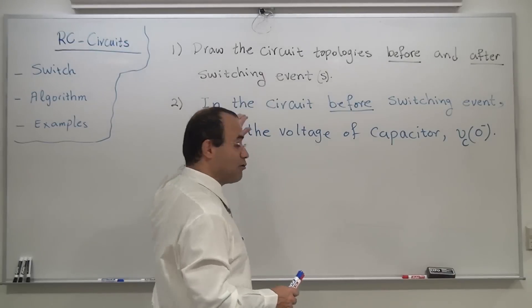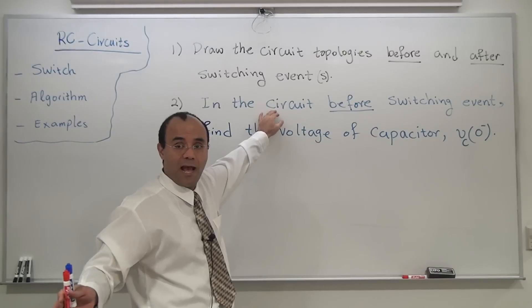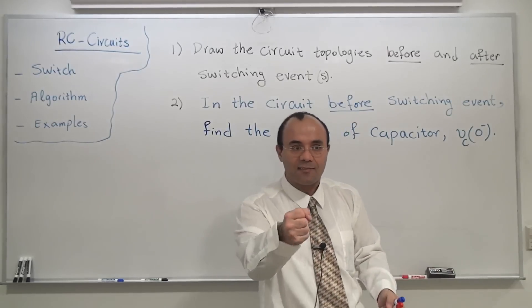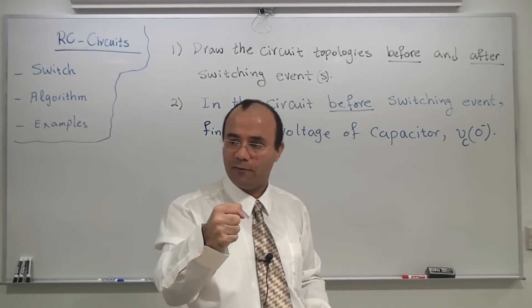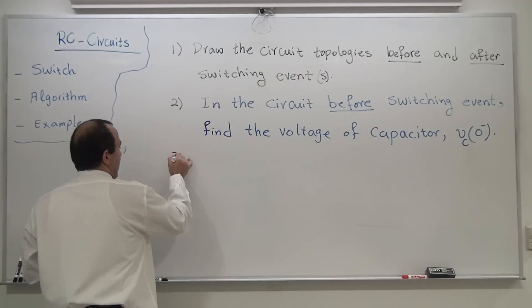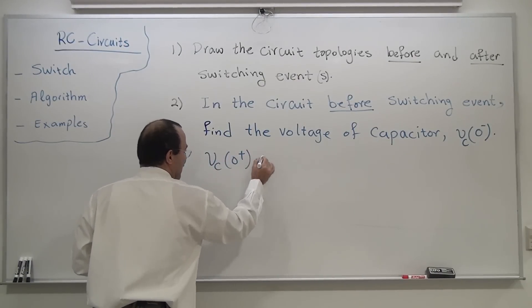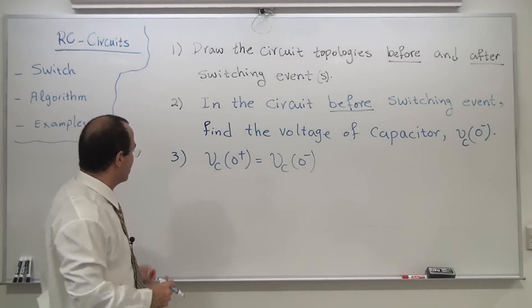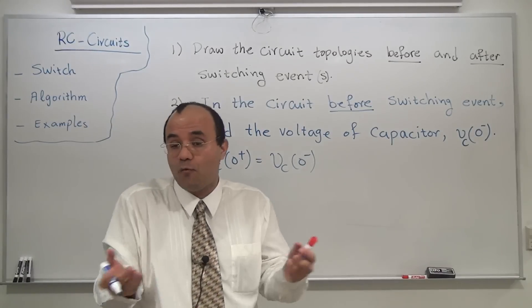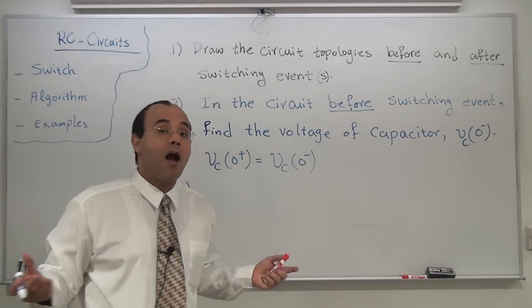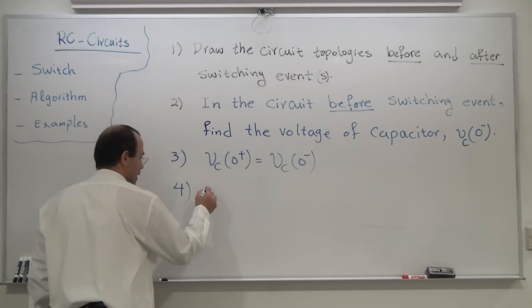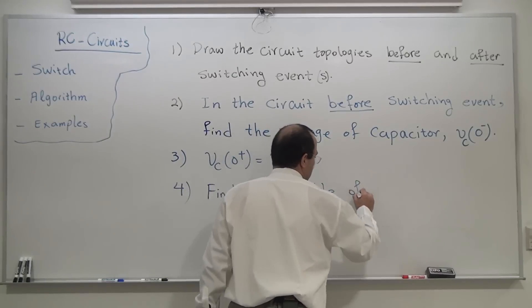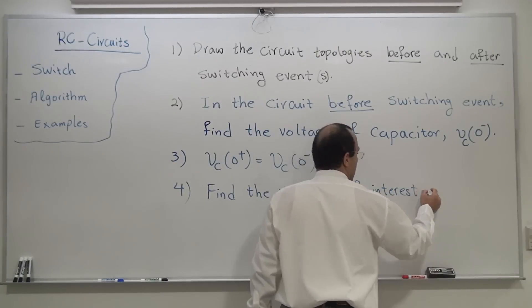Only the voltage of a capacitor doesn't change. The current of the capacitor, voltage and current of a resistor — anything else can change drastically. But the voltage of a capacitor doesn't. If your variable of interest is the current of a resistor, you don't have to care about it initially — you still find V_C first, because that's the only stable variable you can count on across before and after switching events. Because of this nature, V_C(0+) equals V_C(0−). That's why step two is needed.